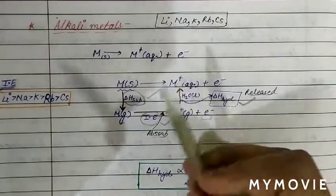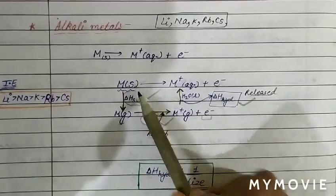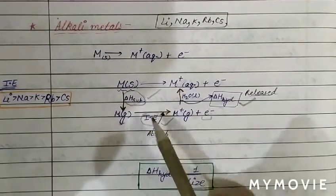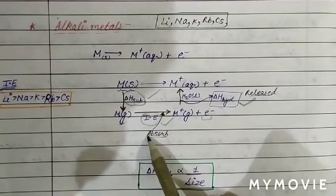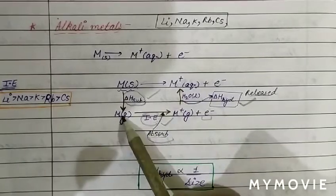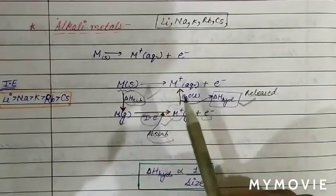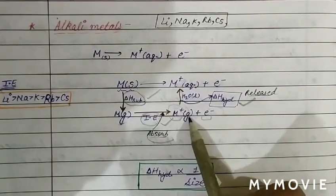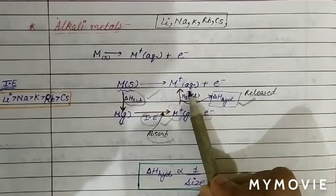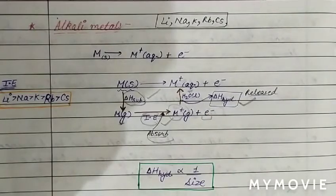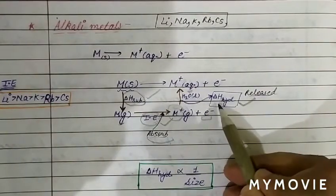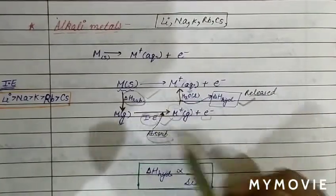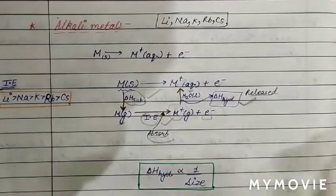So three types of energies are used for the reducing property of alkali metals: sublimation energy to convert solid into gas phase, then ionization energy — both are endothermic processes. Then the gaseous metal ion converts into aqueous phase after hydration, and energy is released — we call this hydration energy. Two energies are endothermic and one is exothermic.